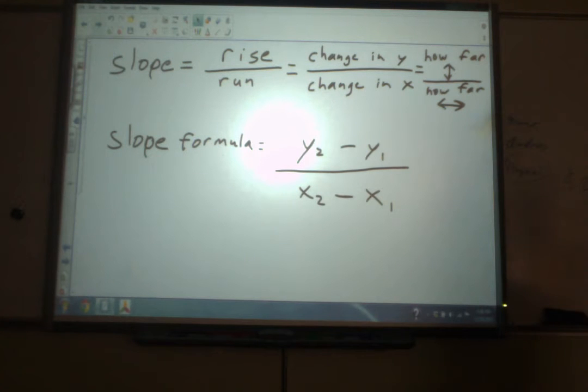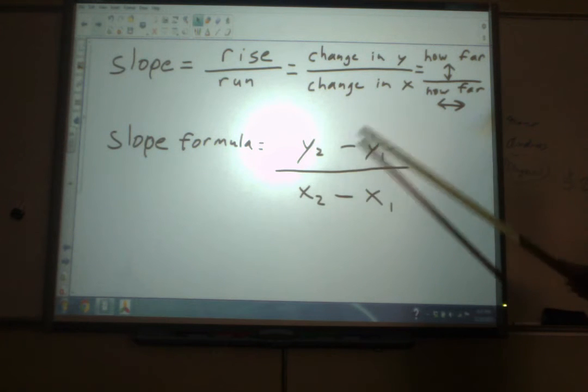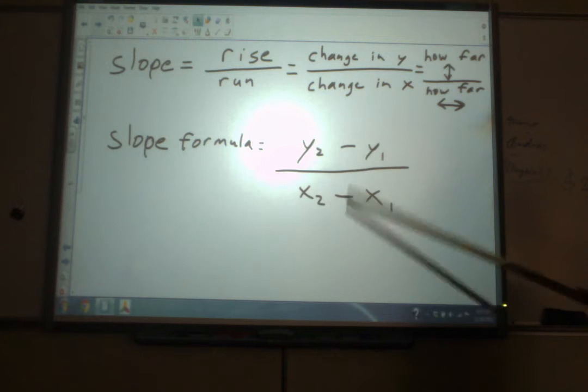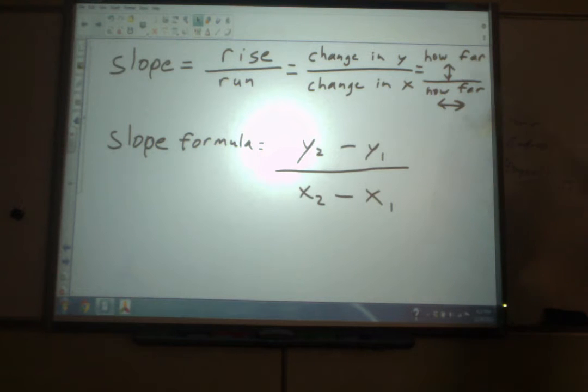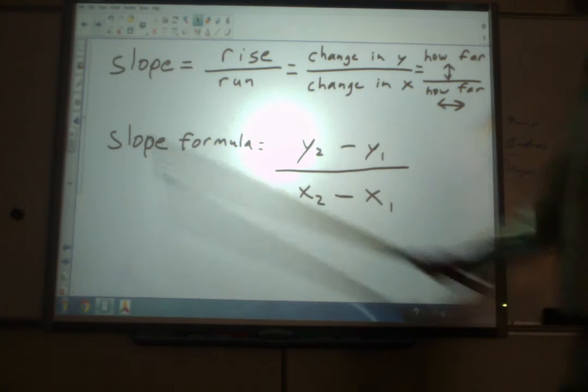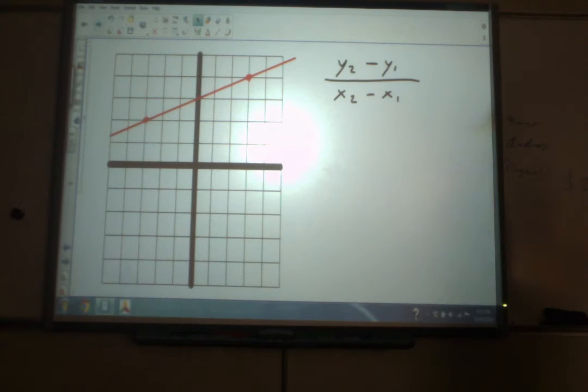There's a special slope formula in math, and it is right here. It's y2 minus y1 over x2 minus x1. And I know that looks confusing right now, but I promise you it's not. I think it's best if we just go ahead and look at how this applies to an actual graph.